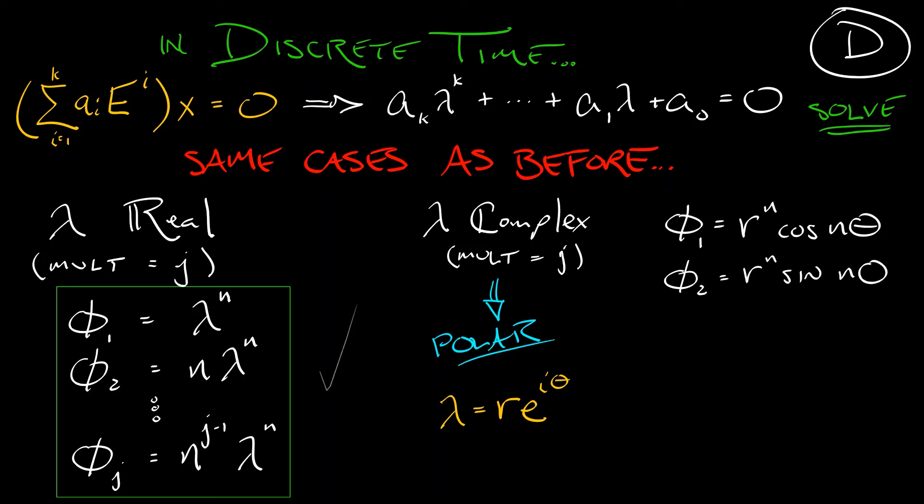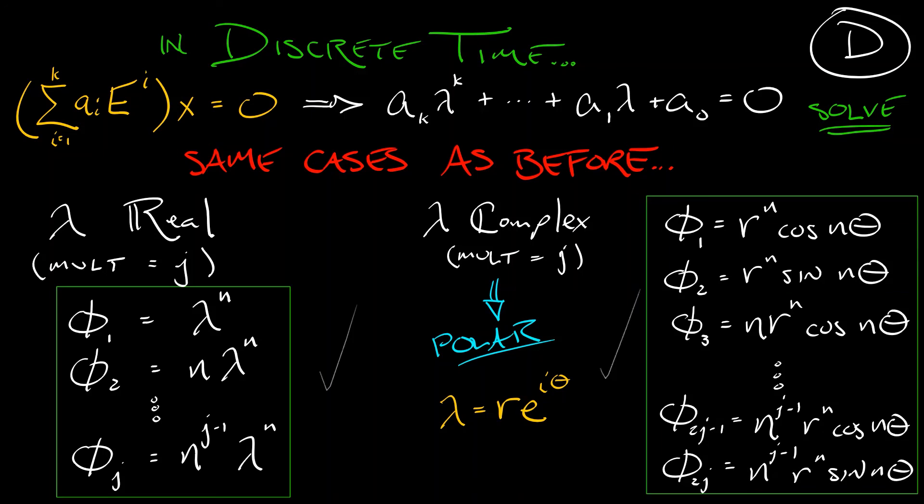Now, if we have complex conjugate roots with higher multiplicity, then what we need to do is take these two basis functions and put increasing powers of n out in front. This matches the pattern that we've seen with real roots and in continuous time as well. Now, that looks complicated. It is kind of complicated, but it's also fairly rare.